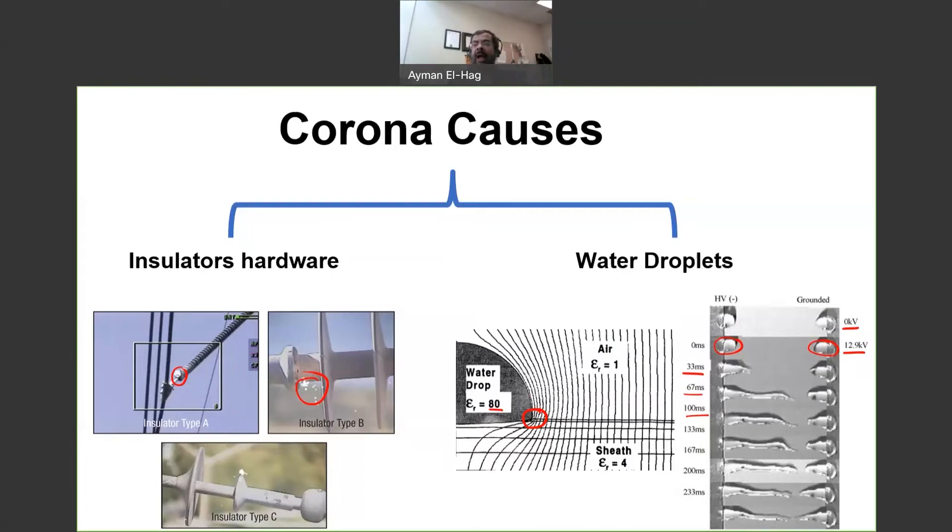The question is, how we can test the material, specifically test the material, the impact of the Corona on the material. Now the inclined plane test we talked about it before, is a test for the material, or testing the impact of dryband arcing on the material.